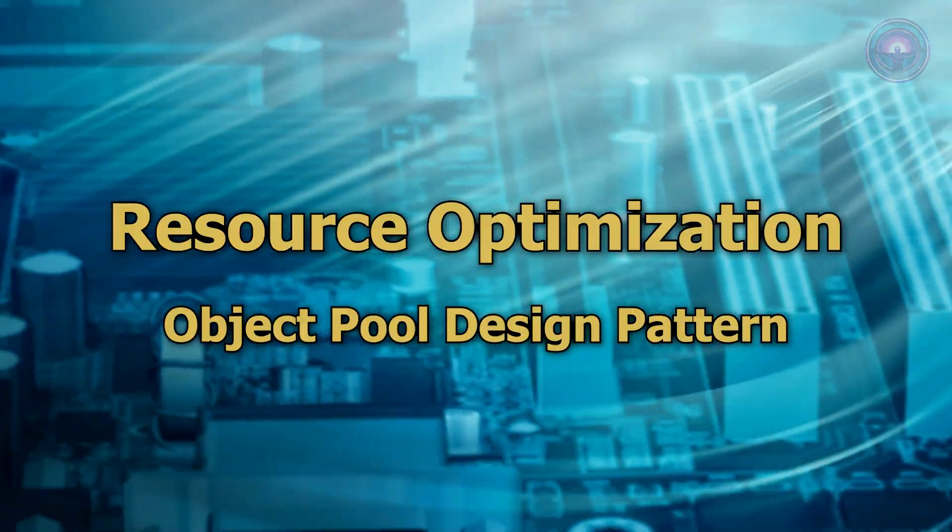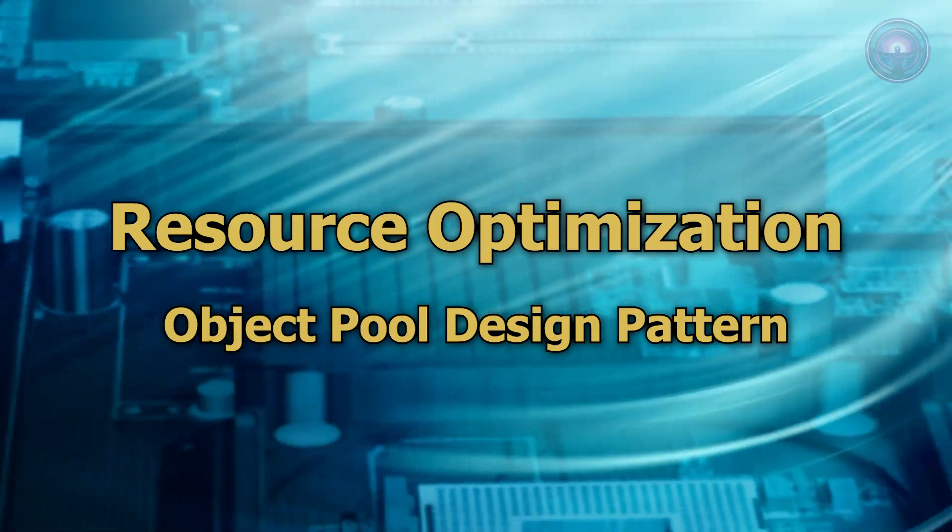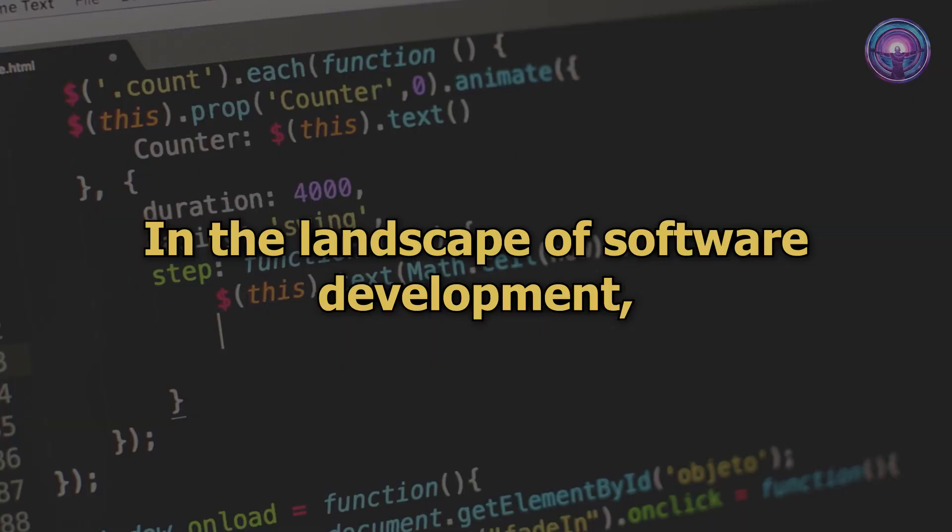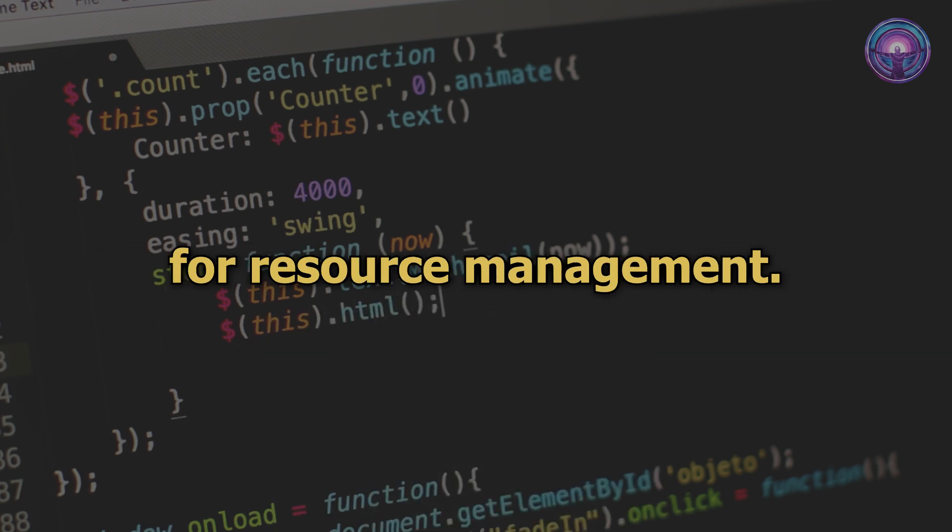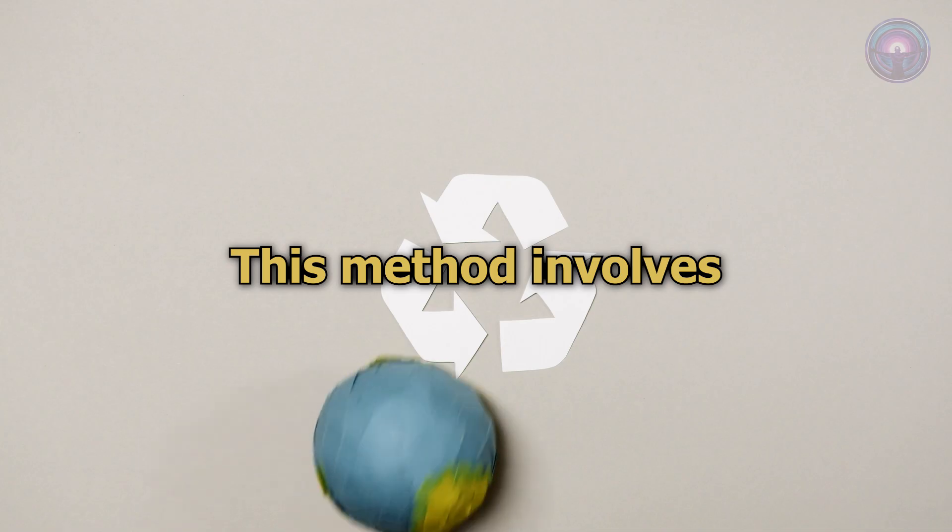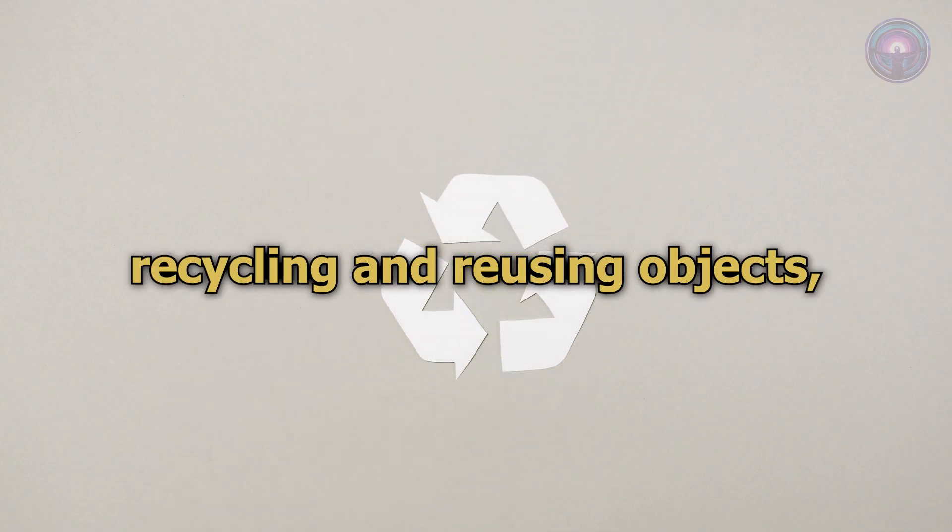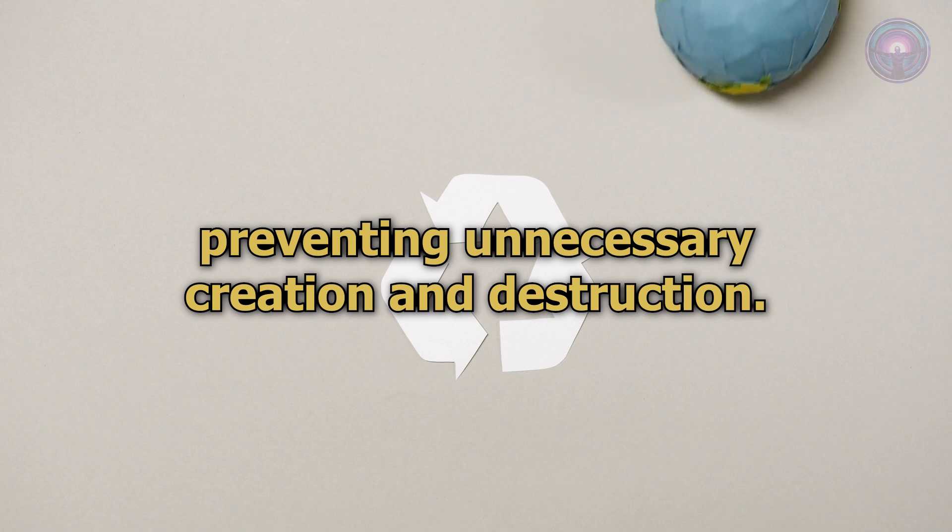Resource Optimization: Object Pool Design Pattern. In the landscape of software development, the object pool design pattern stands out as an efficient strategy for resource management. This method involves recycling and reusing objects, preventing unnecessary creation and destruction.